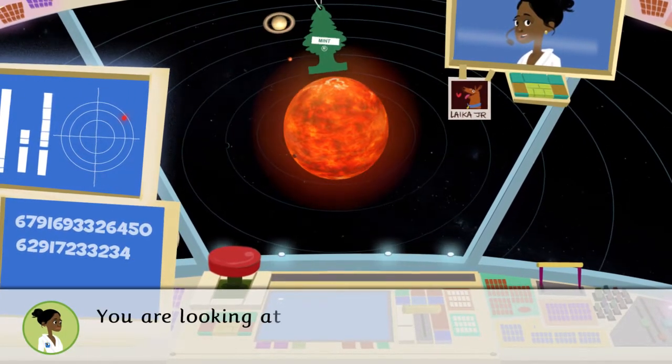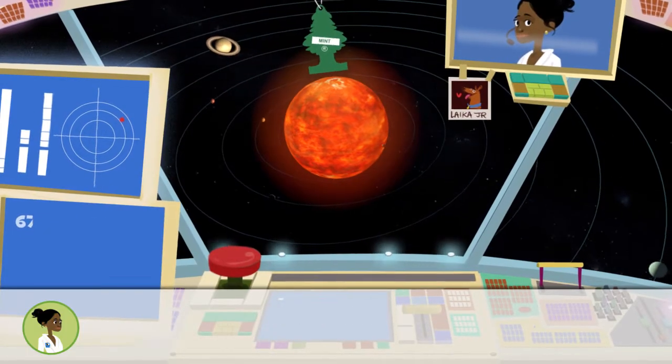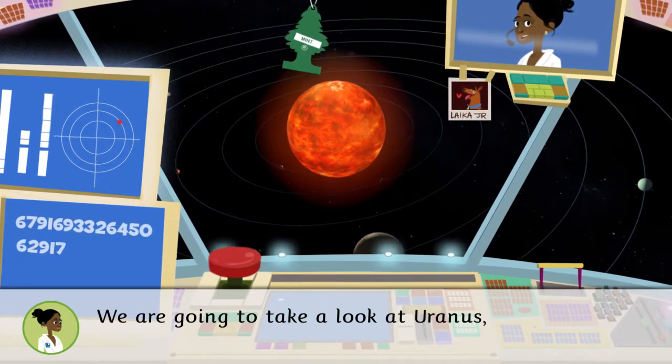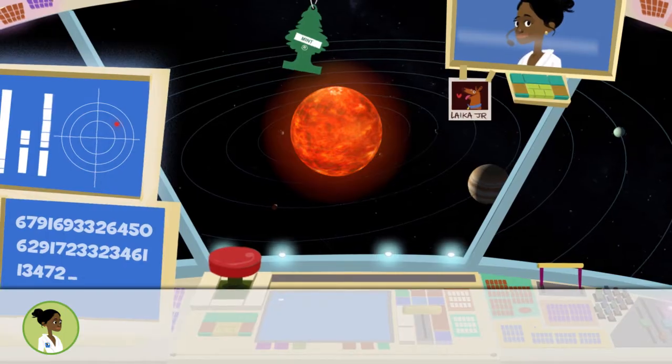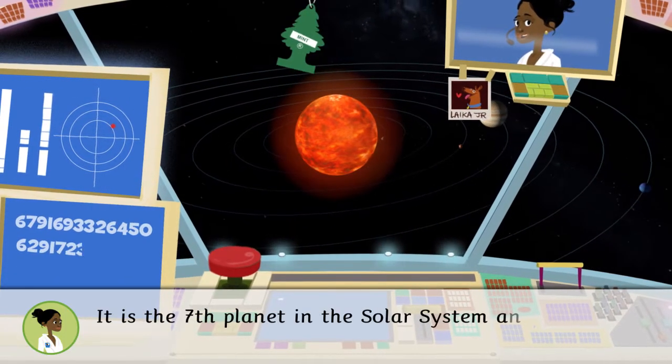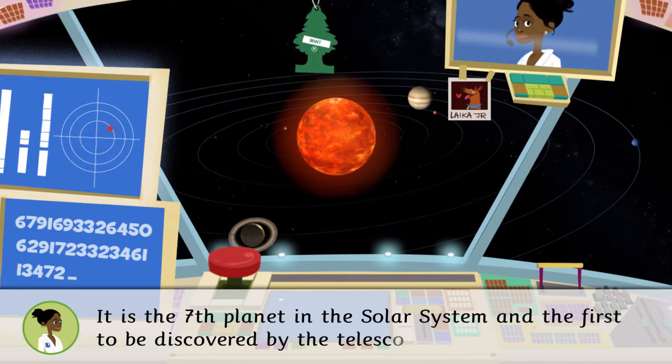You are looking at the solar system. We are going to take a look at Uranus. Do you want to come? It is the seventh planet in the solar system and the first to be discovered by telescope.